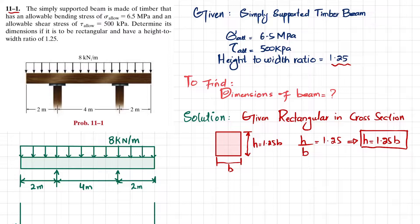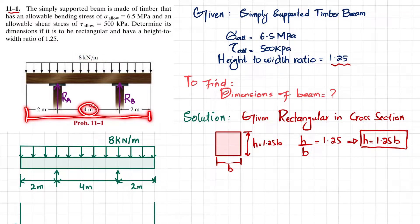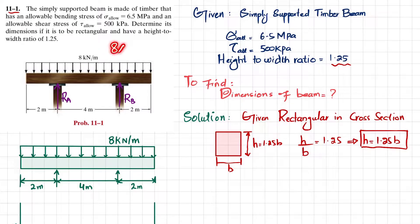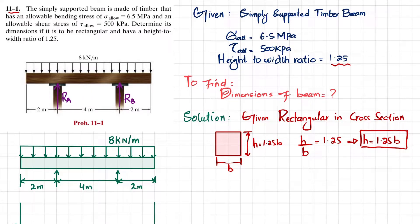The first step is to find the reaction forces by removing the supports. Let Ra be the left reaction and Rb be the right reaction. The total length of the beam is 4 plus 2 plus 2, which is 8 meters. Converting the distributed load into a point load: 8 kilonewton per meter multiplied by 8 meters equals 64 kilonewton, acting at the midpoint, which is at a distance of 4 meters, or 2 meters from each support.